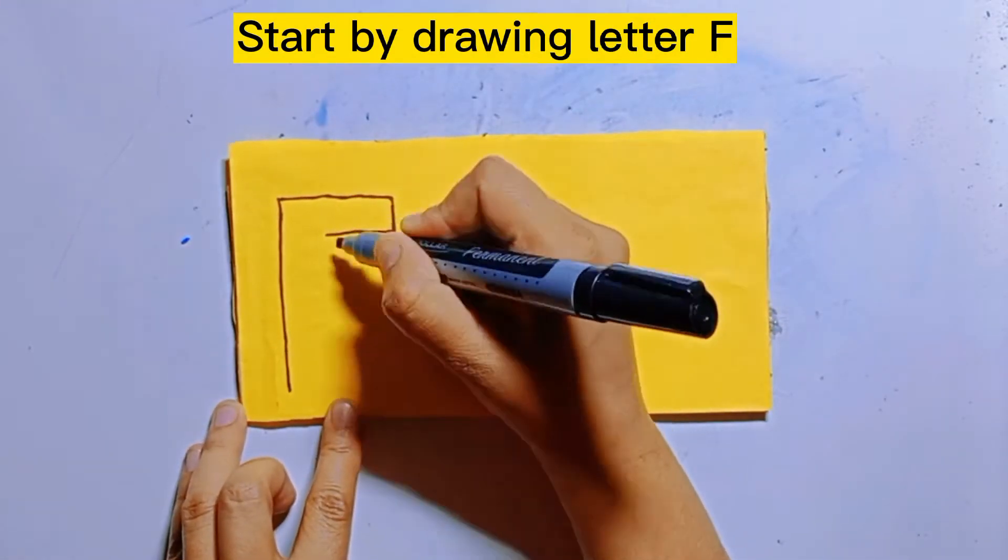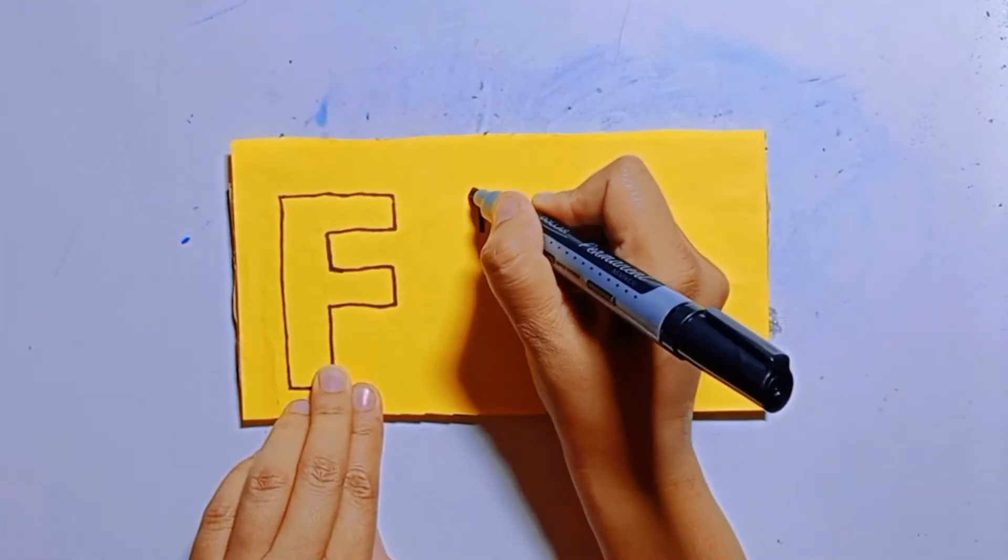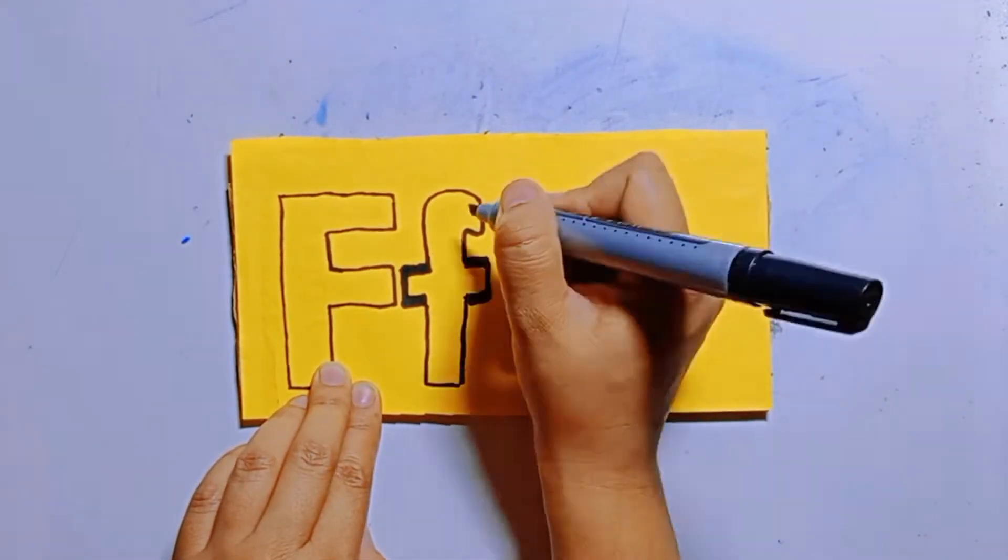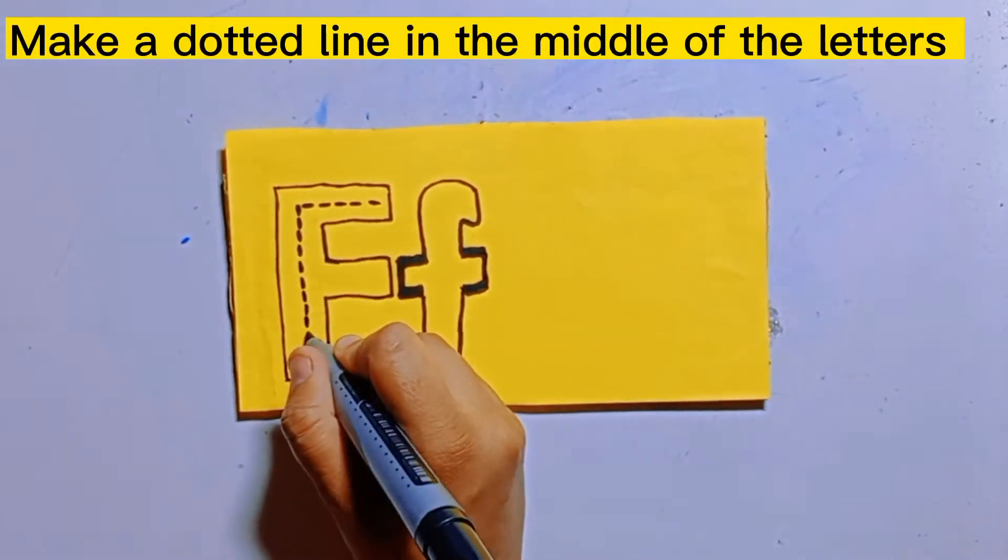Start by drawing letter F. Make a dotted line in the middle of the letters.